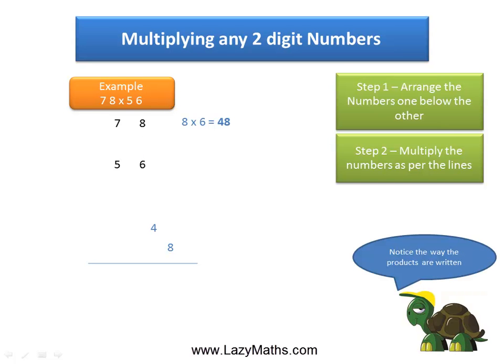The next step is to multiply 7 with 6 and 8 with 5. So we multiply 7 times 6 and get 42, and 8 times 5 and get 40, then we add the two together to get 82, and we write 82 again in the same exact format.